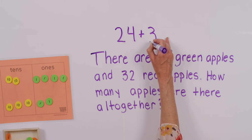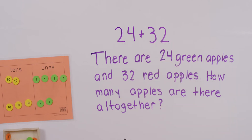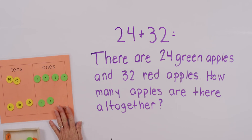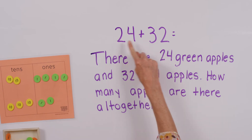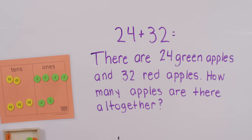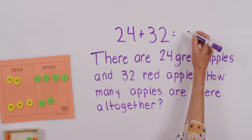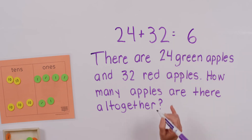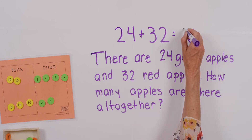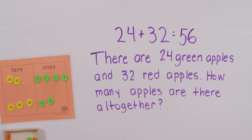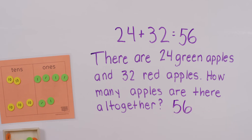We have 24 plus 32 — are we looking for a part or the whole? We're looking for the whole. Let's think about what this equals. We can do some mental math: two tens plus three tens equals five tens — hold those five tens in your mind. Now the ones: four ones and two ones equals six ones. Going back to the five tens we were holding — 24 plus 32, we've got 56 apples altogether. Should we make a pie with that? Let's try a couple more.